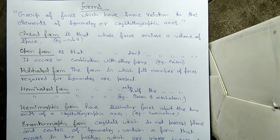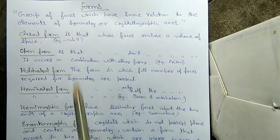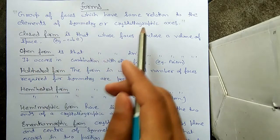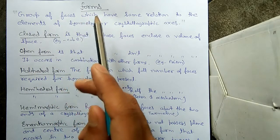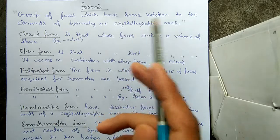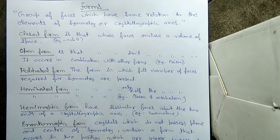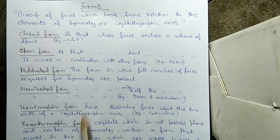First of all we are going to know what is a form. A form is basically a group of faces which have the same relation to the elements of symmetry. We can also say it is a group of faces which have the same relation to the crystallographic axis. That is called a form. So now we are going to learn the different types of forms.